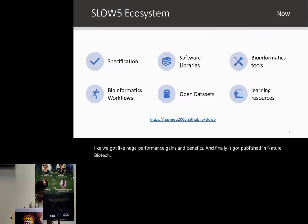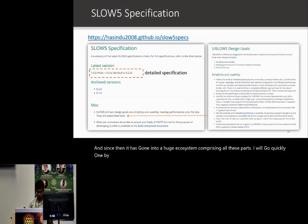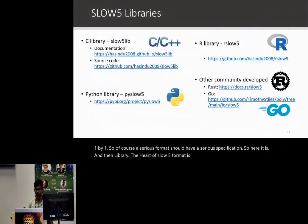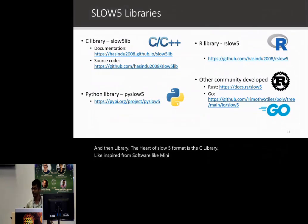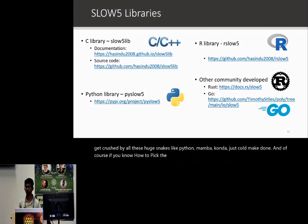Finally, it got published in Nature Biotechnology. Since then, it has grown into a huge ecosystem. A serious format should have a serious specification — so here it is. The heart of the SLOW5 format is the C library, inspired by software like minimap, with very limited dependencies — you don't have to wrestle with Python, Mamba, or Conda; just call make and you're done. And of course, if you prefer Python, pyslow5 is there.